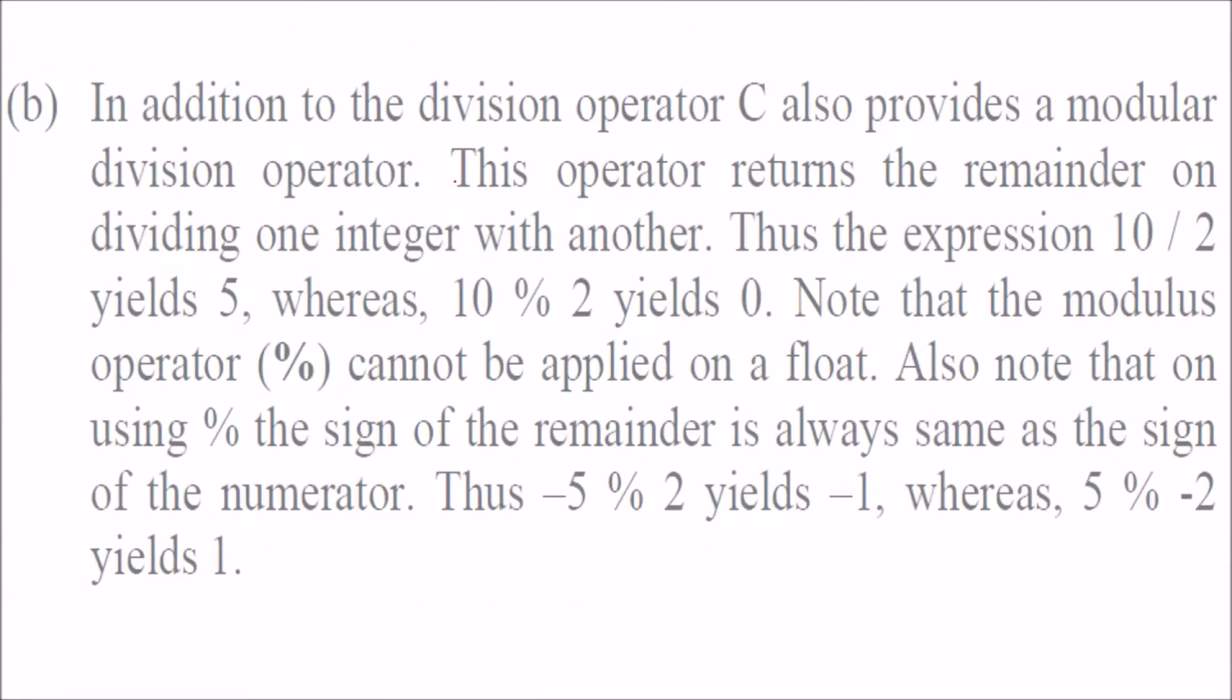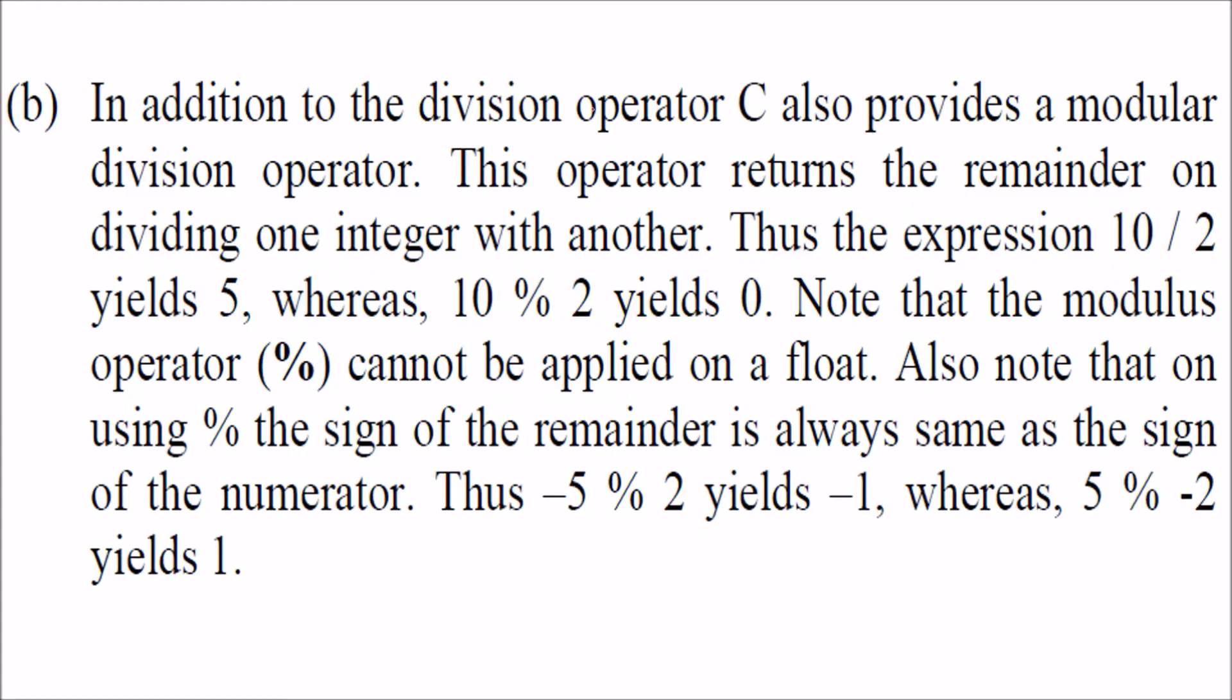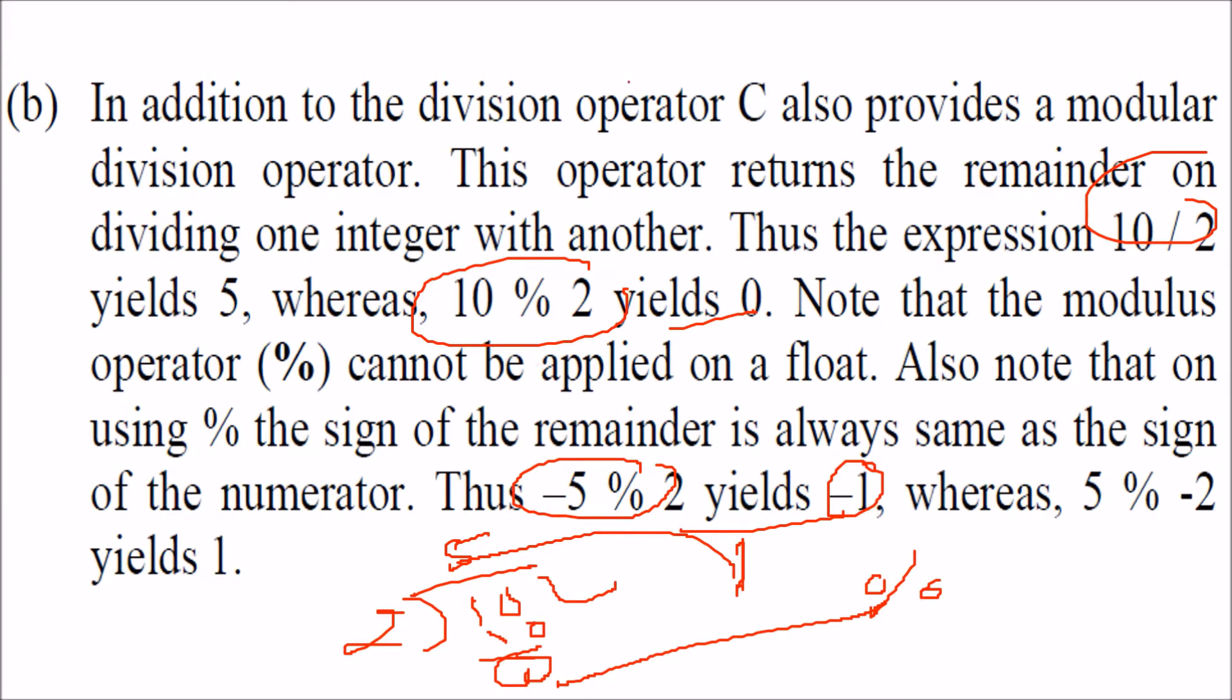There are two operators you have to understand: division and modulo. If I take 10 divided by 2, 2 times 5 is 10, you get remainder as 0. The division operator will give you 5. The modulo operator will give you the remainder, which is 0. So 10/2 yields 5, whereas 10%2 yields 0. For -5%2, 2 times 2 is 4, this gives you -1. So -5/2 is -2, and -5%2 is -1. Modulo gives you the remainder, and division gives you the actual quotient value.